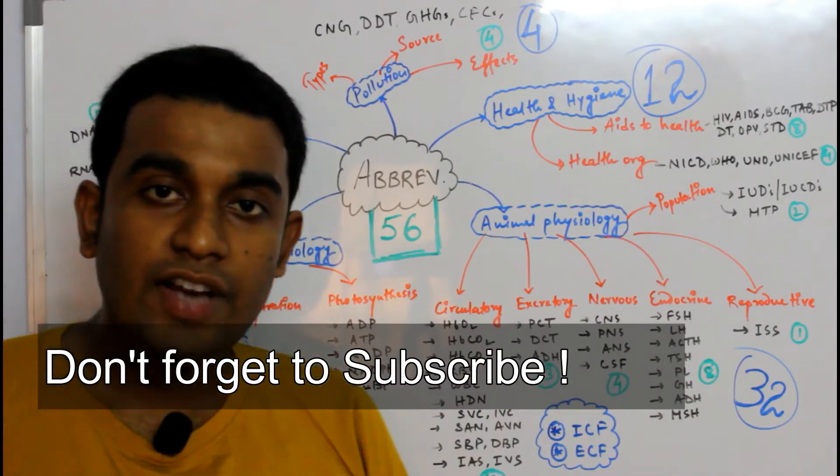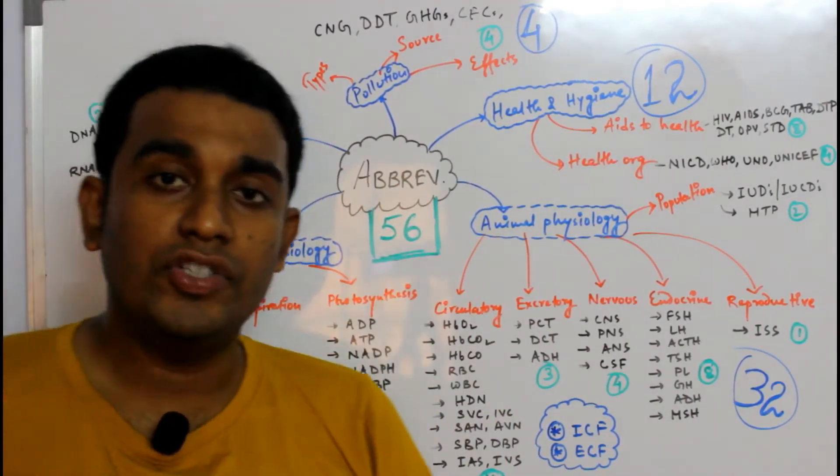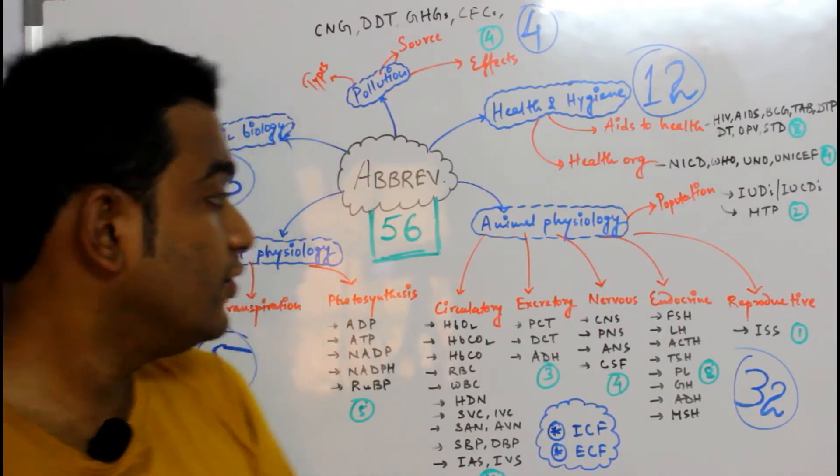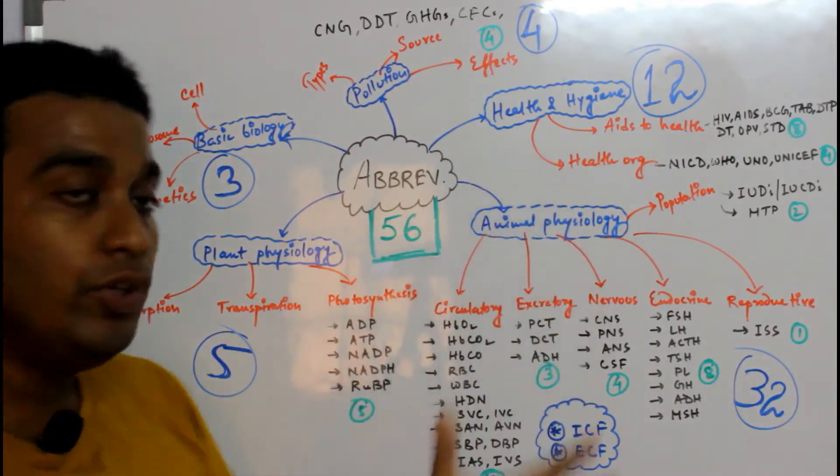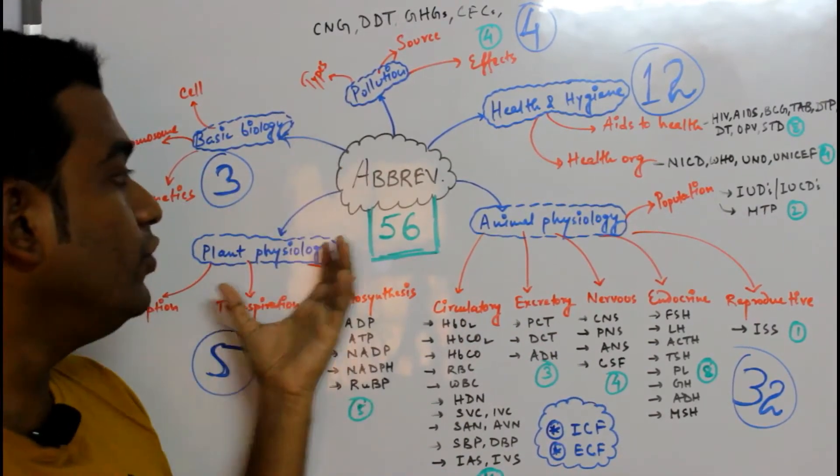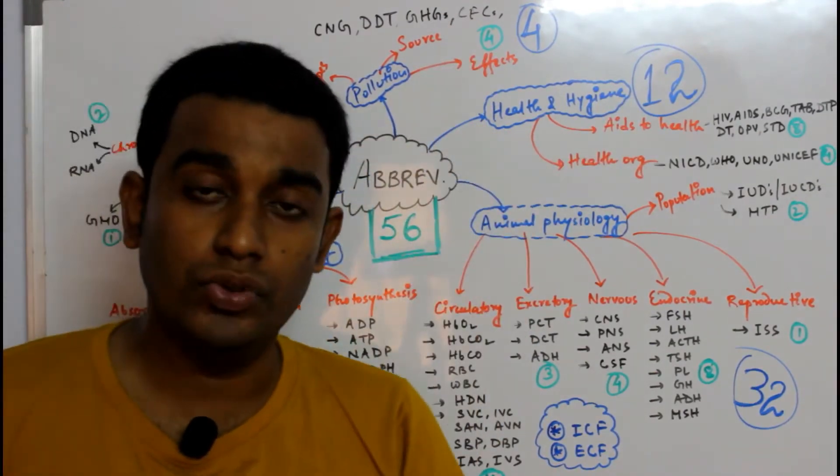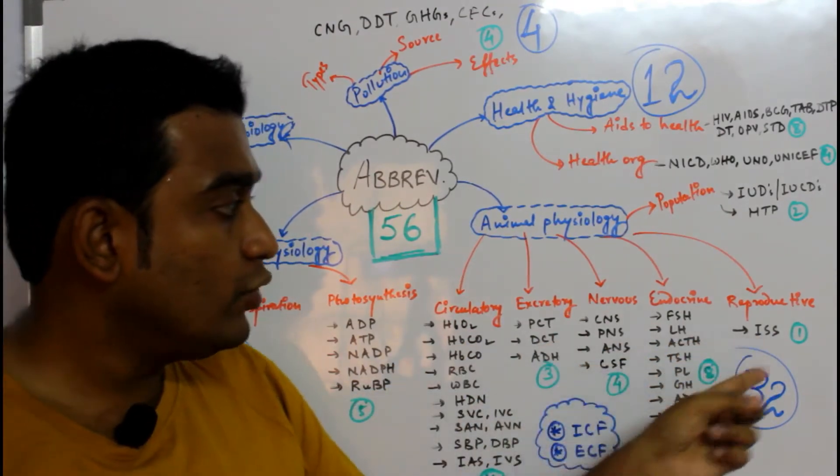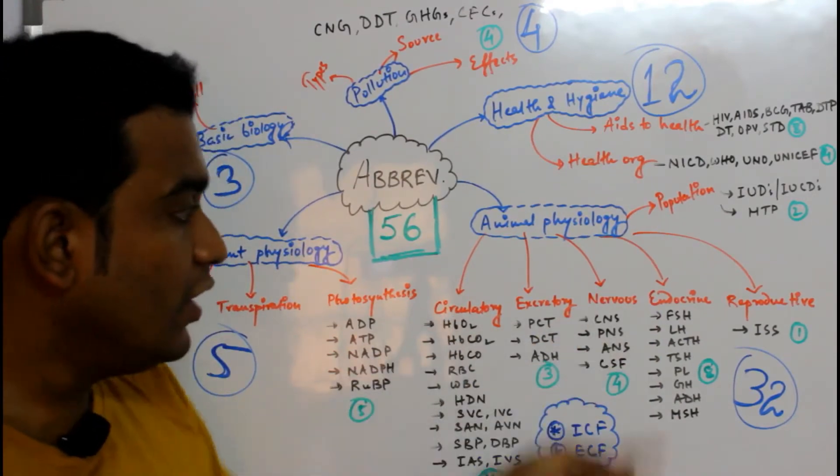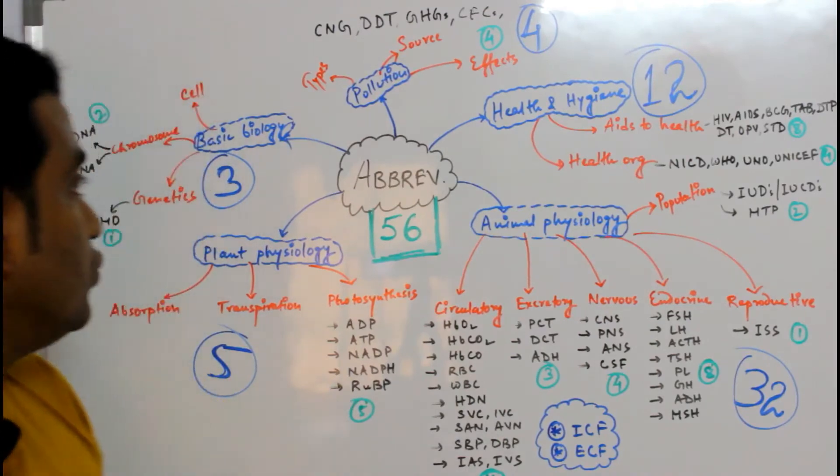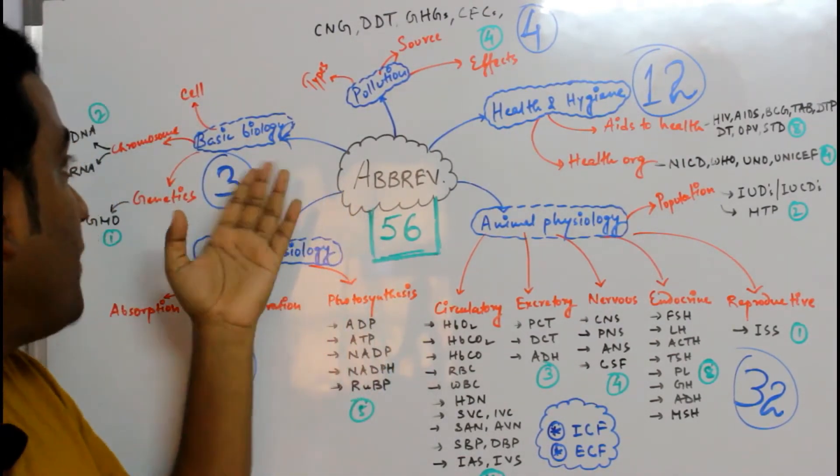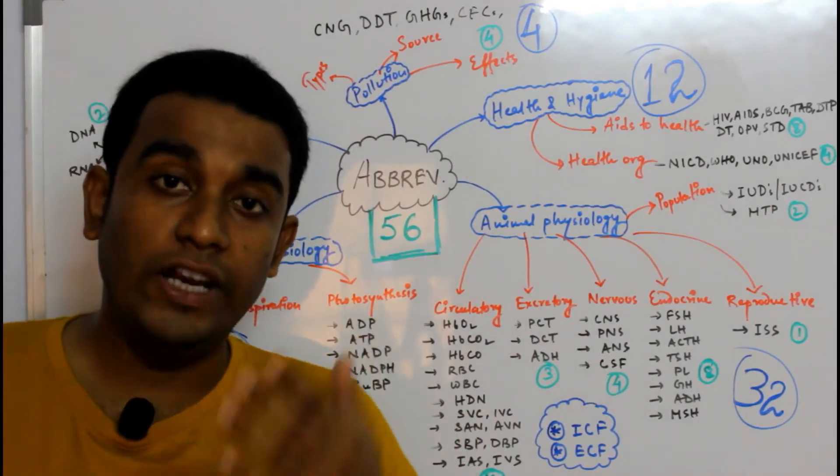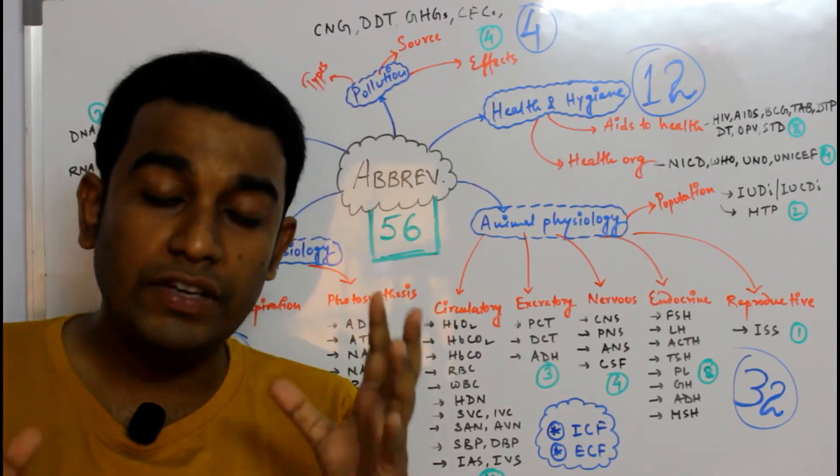Before we begin with the abbreviations, let's talk about the syllabus at a glance. We totally have five units named Basic Biology, Plant Physiology, Animal Physiology, Health and Hygiene, and Pollution. I've written all the chapters separately so we can look at the chapters and their specific numbers of abbreviations.